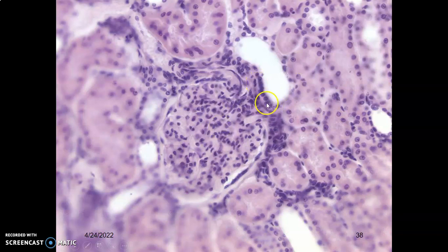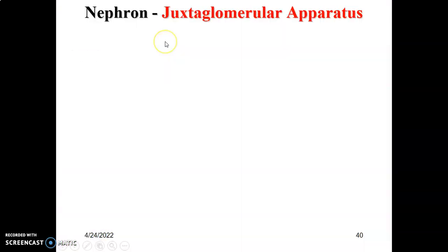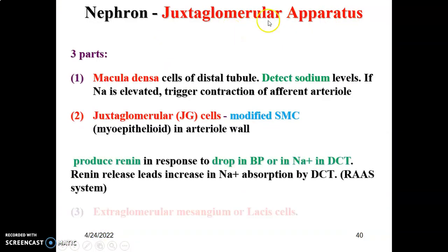Again, here are the macula densa cells. This is your distal convoluted tubule, and this is definitely your glomerulus with the Bowman's capsule, parietal layer of simple squamous epithelium. Again, the columnar cells of the distal convoluted tubule — this is definitely the macula densa cells. So we have what is called the juxtaglomerular apparatus.